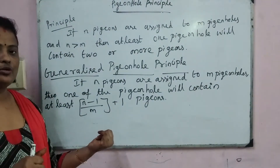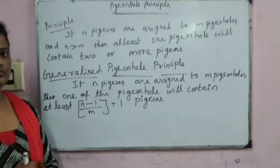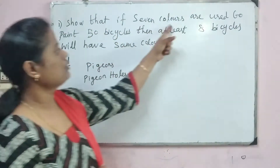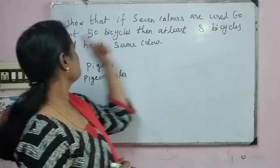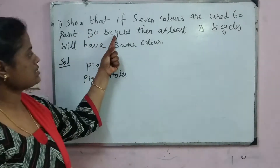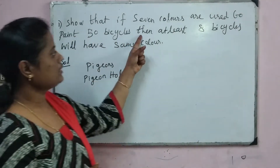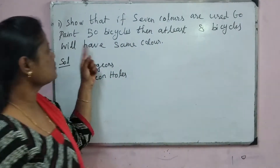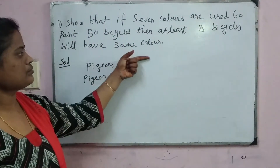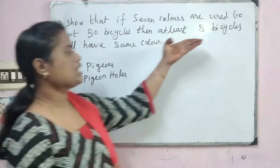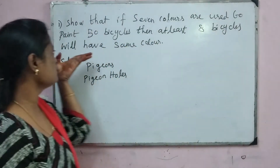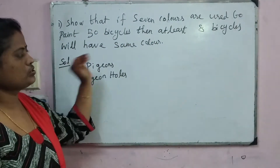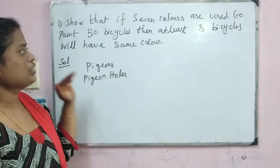Let's have a look at the first problem. Show that if 7 colors are used to paint 50 bicycles, then at least 8 bicycles will have the same color. Our answer would be 8 bicycles will have the same color.